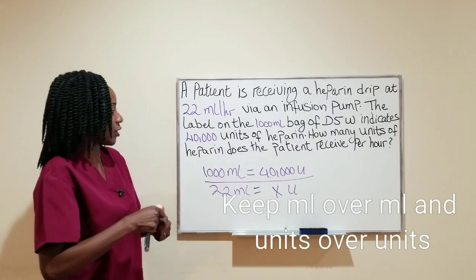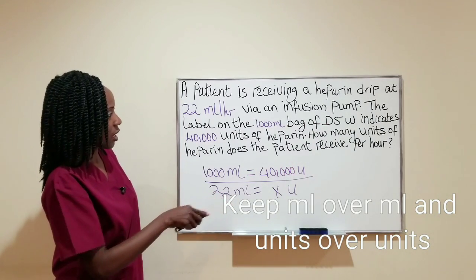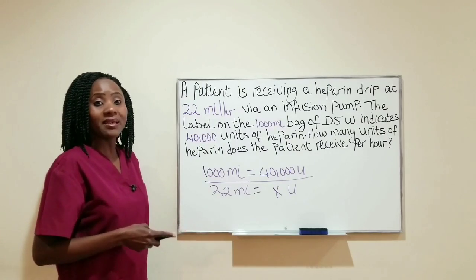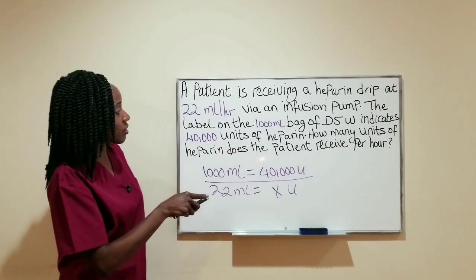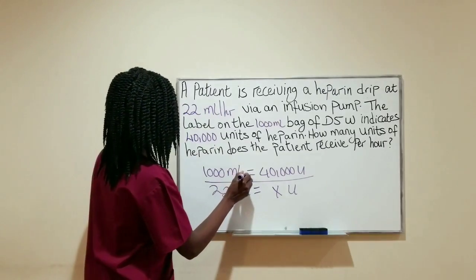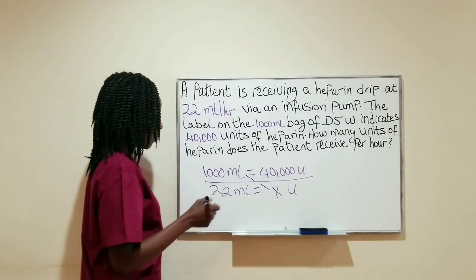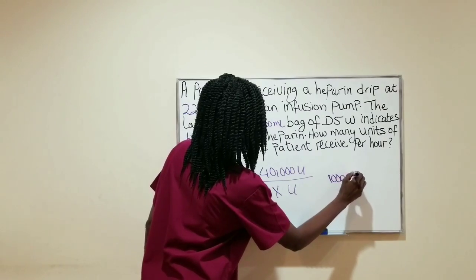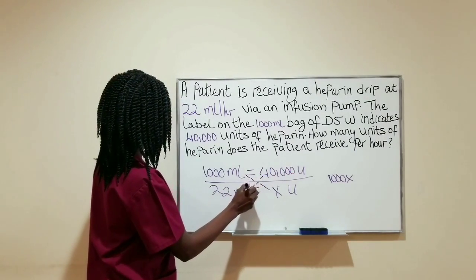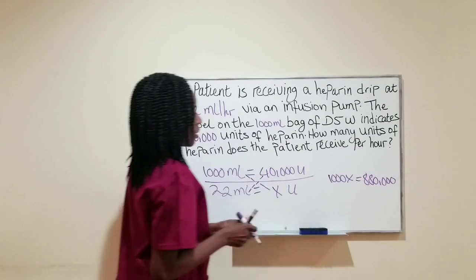The X here is unknown. We already know that the 1,000 mL bag of D5W has 40,000 units, and we want to find out how many units equal 22 milliliters per hour — that is what the question asked. So I'm going to cross-multiply: 1,000 milliliters times X gives me 1,000X. Then I cross-multiply again: 40,000 units times 22 milliliters gives me 880,000.